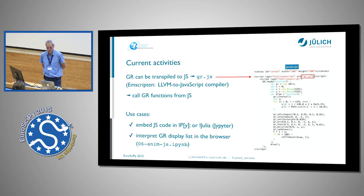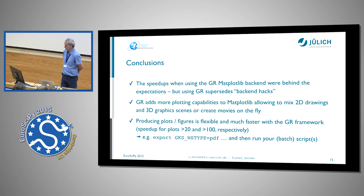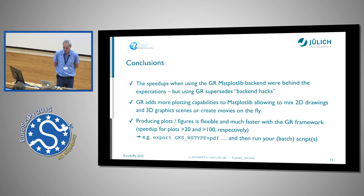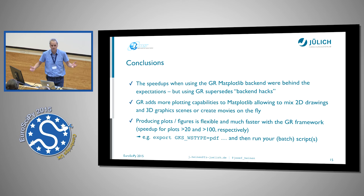Our current activities are focused on JavaScript. As I mentioned, we have transpiled our complete software to JavaScript, and on the right side you can see a code snippet which uses our software to render some graphics within the Firefox or Safari browser. The speed-ups we expected were not so high, but the advantage is that we don't have to make backend hacks to speed up Matplotlib. On the other side, we now have more capabilities — we can mix 3D code and OpenGL code with pure Matplotlib code. And we can produce figures much faster; for example, if you want to create 100 PDFs with Matplotlib, it's about 100 times faster with the GR framework.